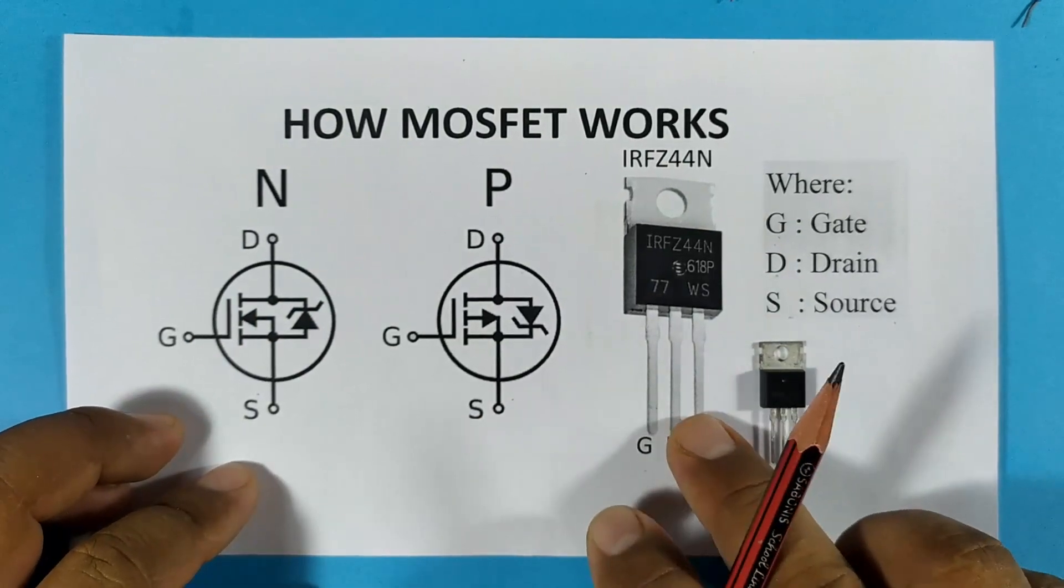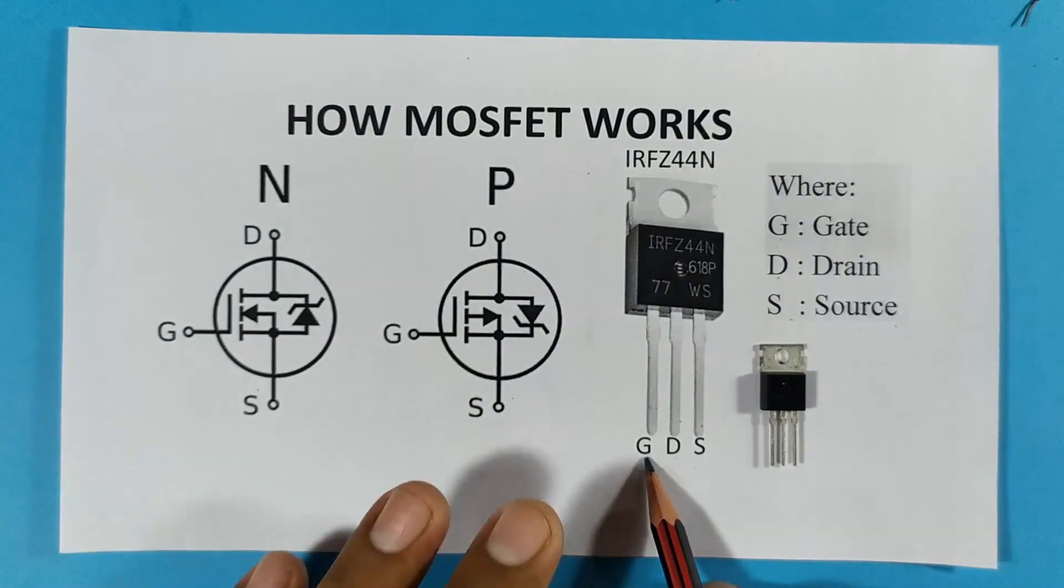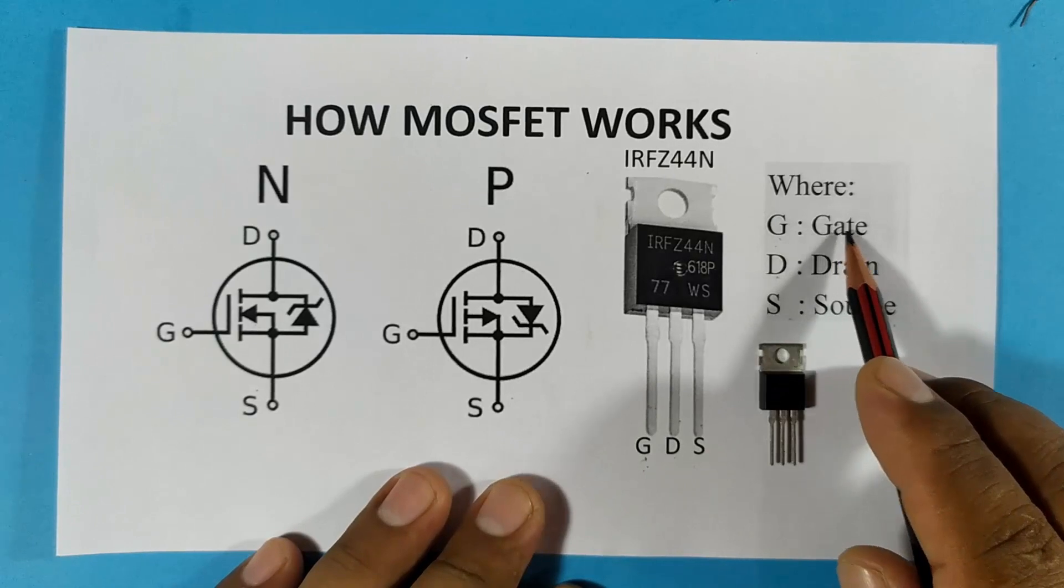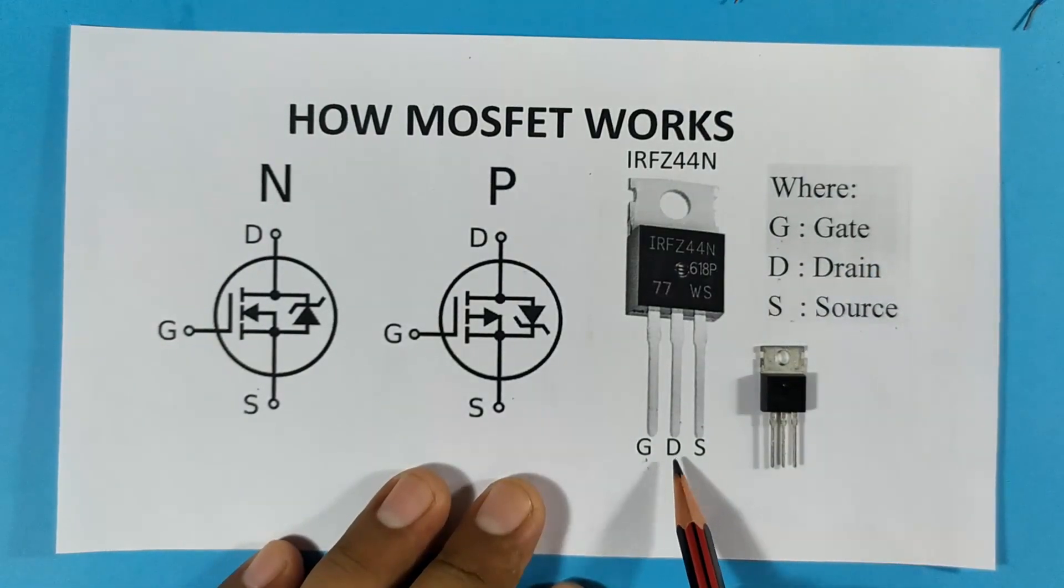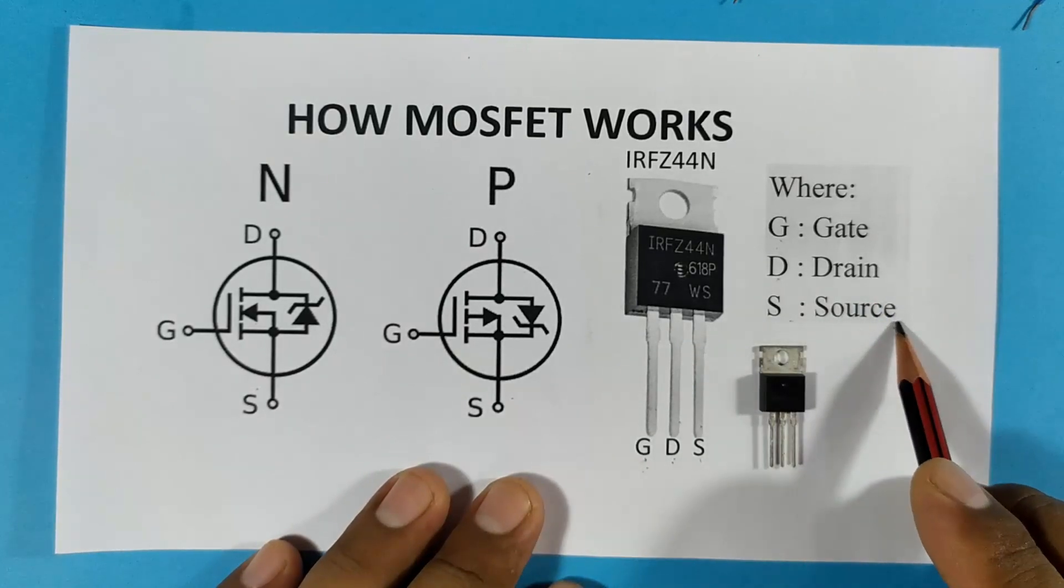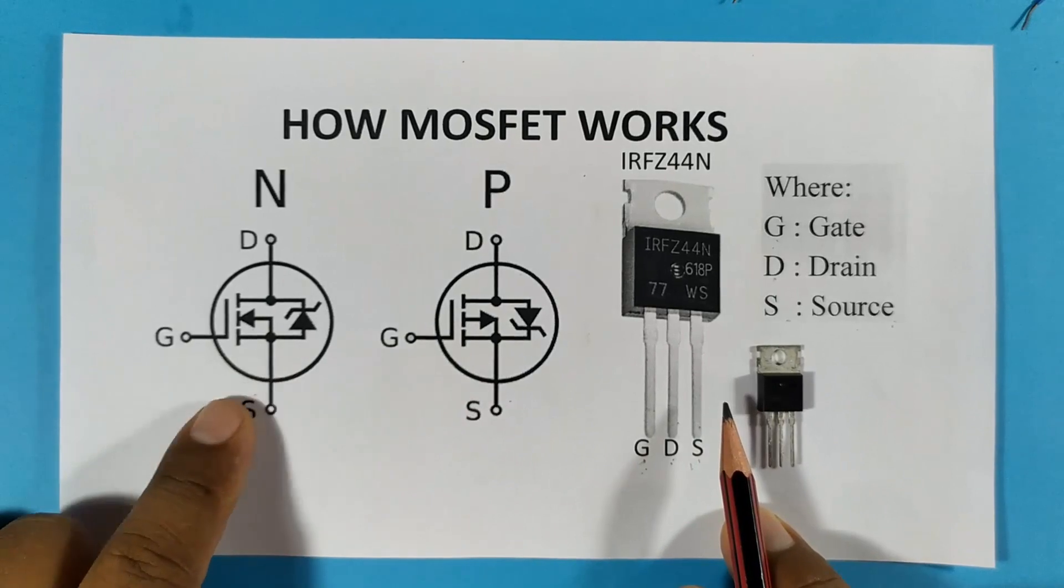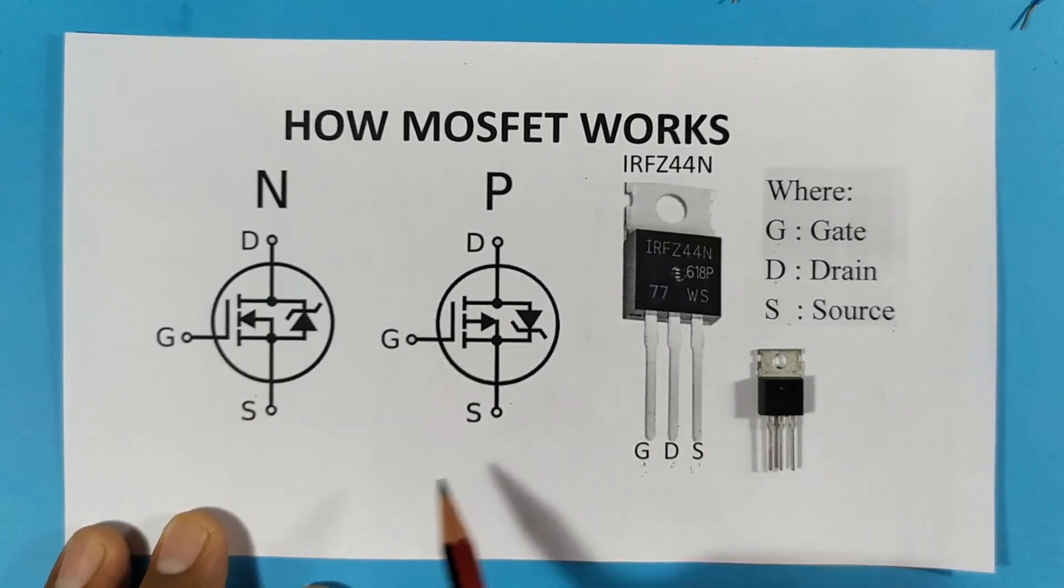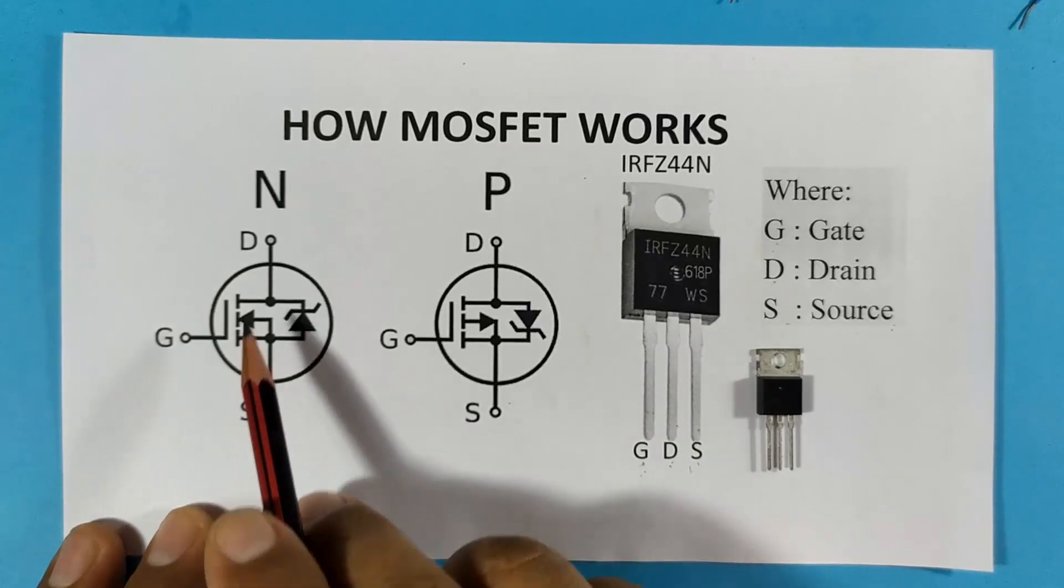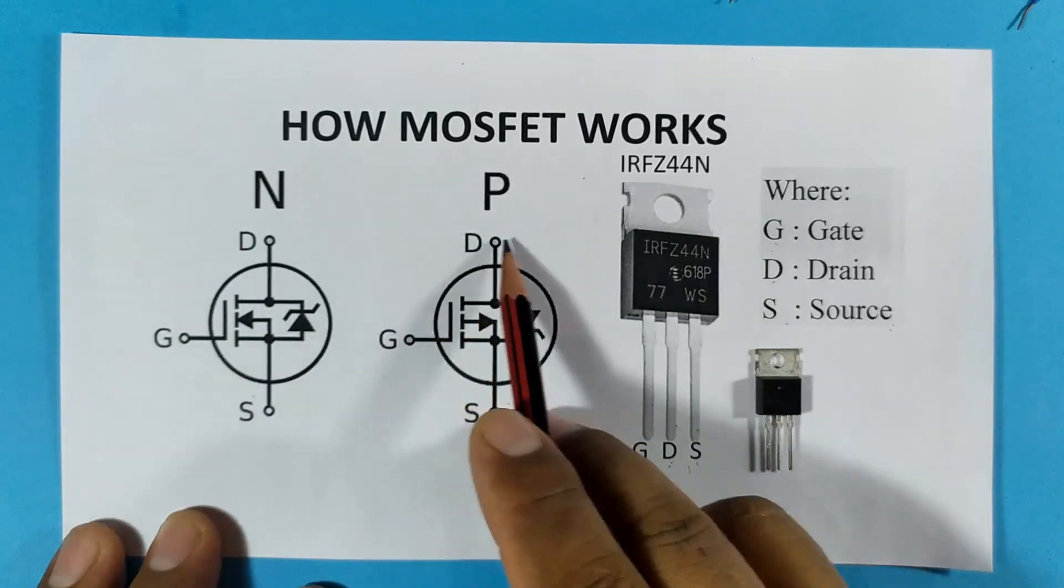These MOSFET transistors present terminals with different names than BJTs. Pin 1 is the G or gate, pin 2 is the D or drain terminal, and pin 3 is the S or source. Now if we look at the symbol, we can see the distribution of the terminals: gate, source, and drain. And we have N-channel and P-channel transistors.